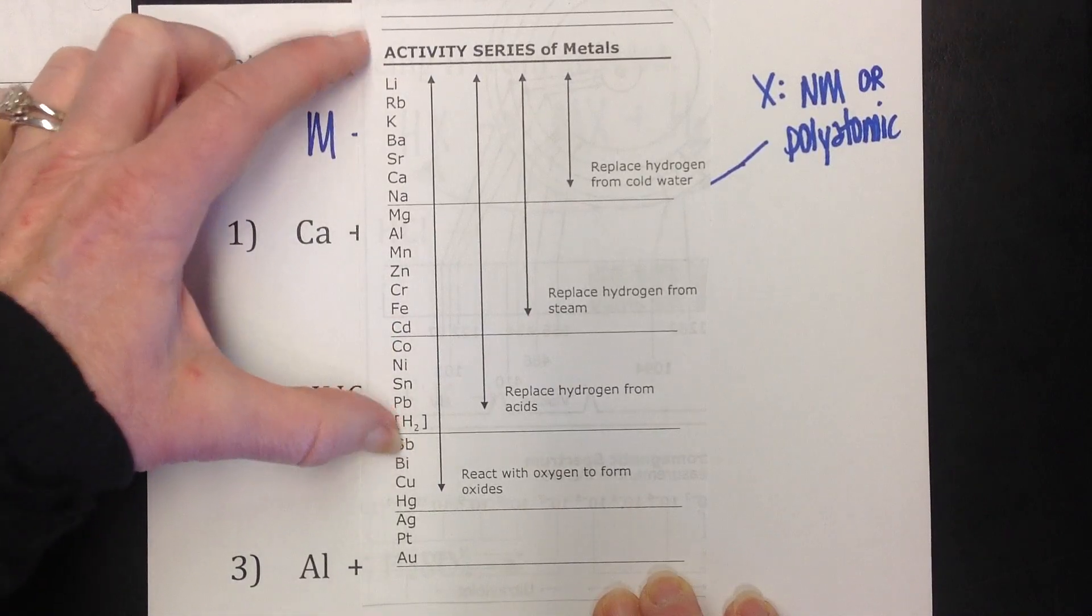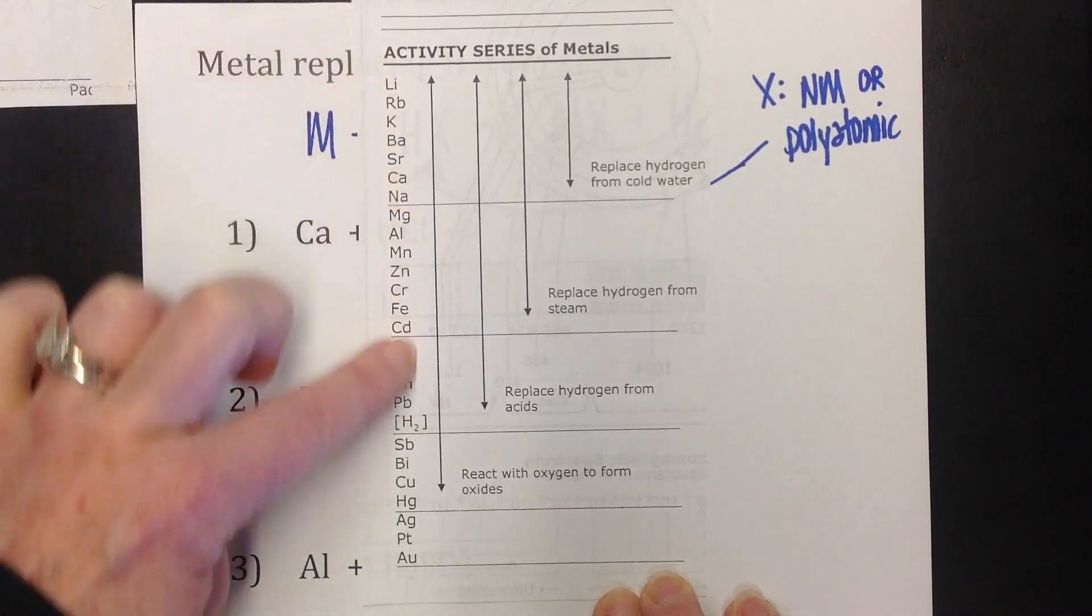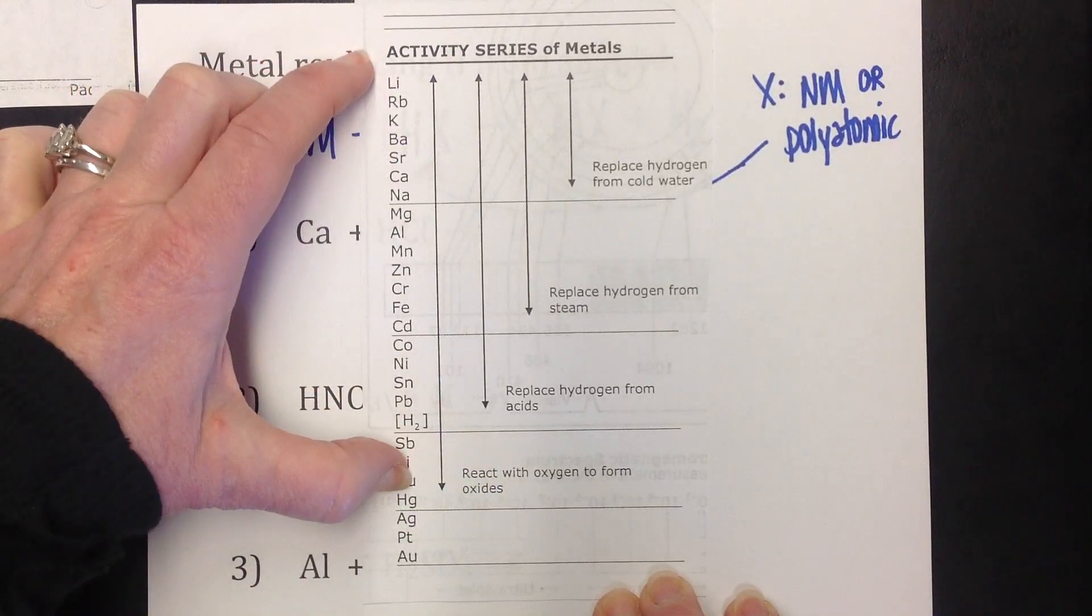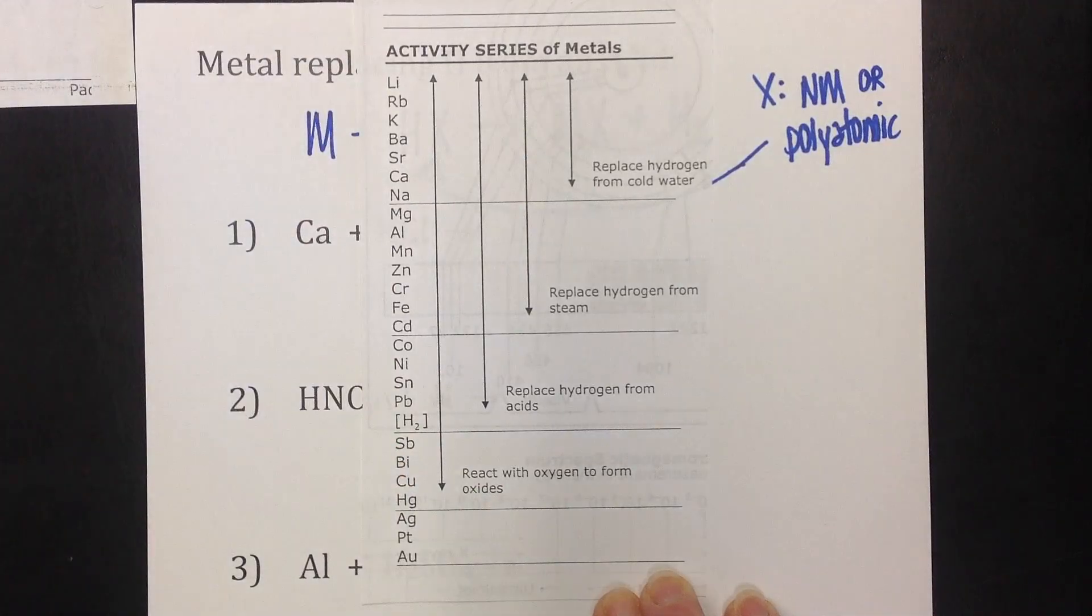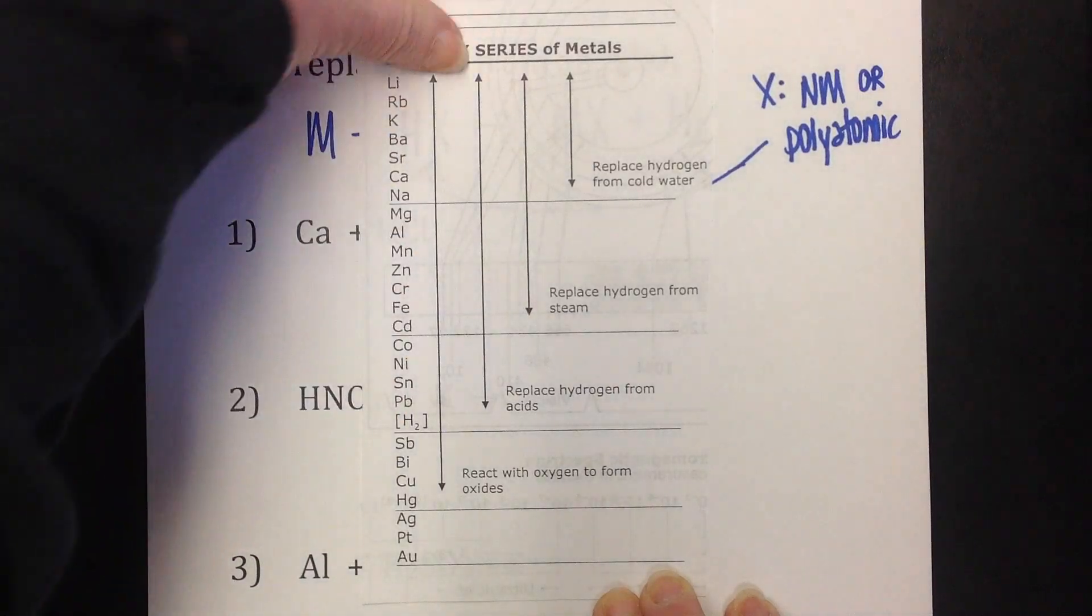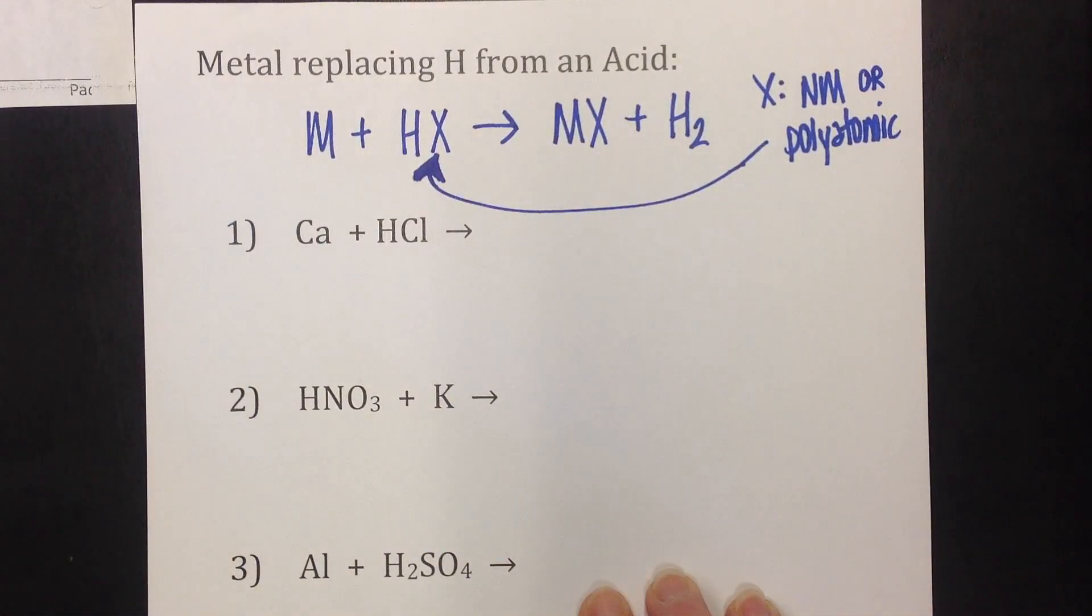This group, and this is the one we're interested in today, all of these guys from this line up, right here's the arrow, they can kick the hydrogen out of an acid. So in order for the metal to replace the hydrogen from the acid, it's going to have to fall into this group. So you would actually need the activity series for these as well.